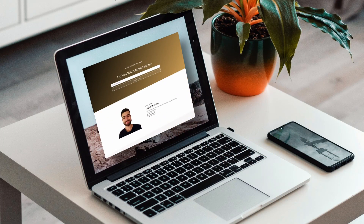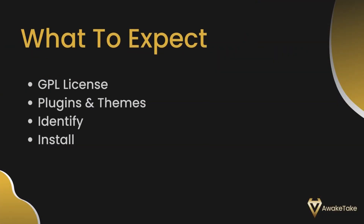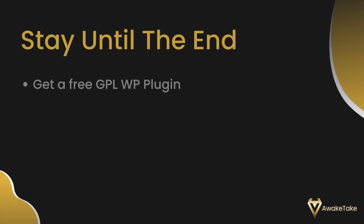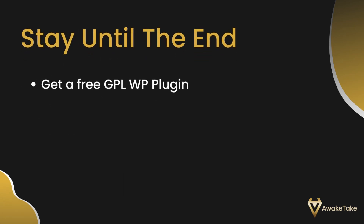Do you want to build a professional website without breaking the bank? You can use GPL WordPress plugins, which are very easy to use and an affordable solution for all your WordPress websites. In this video you will learn what a GPL license means, how that applies to plugins and themes, how to identify GPL WordPress plugins and themes, and how to install them on your WordPress site. And if you stay until the end, I'm also going to show you how you can get one GPL theme of your choice for absolutely free.